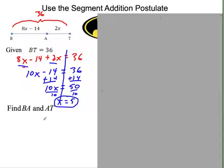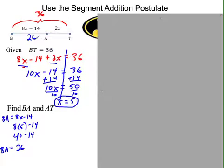Now it wants me to find BA and AT. BA is 8x minus 14, so all you have to do is plug your 5 in there. 8 times 5 minus 14. That's 40 minus 14, which is 26. So BA is 26. Can you tell me this piece? If this is 26, the whole thing is 36, what does it have to be? It has to be 10. AT is 2x, so 2 times 5 is 10.